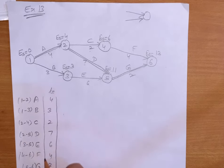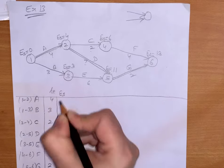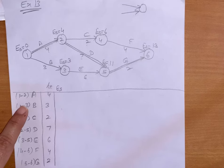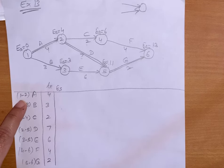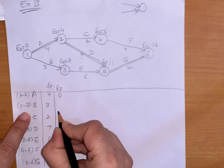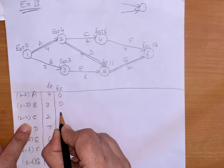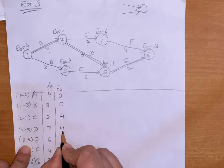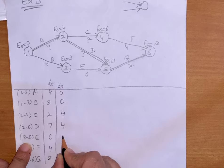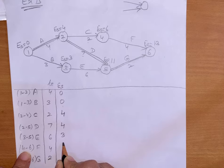Now we are preparing the table. For earliest start, you will record for the start event. So earliest start time for activity 1 to 2: ES for event 1 is 0. For 1 to 3, earliest start time for event 1 is 0. For 2 to 4, earliest start time for event 2 is 4. For 3 to 5 it is 3, for 4 to 6 it is 6, and for 5 to 6 it is 11.